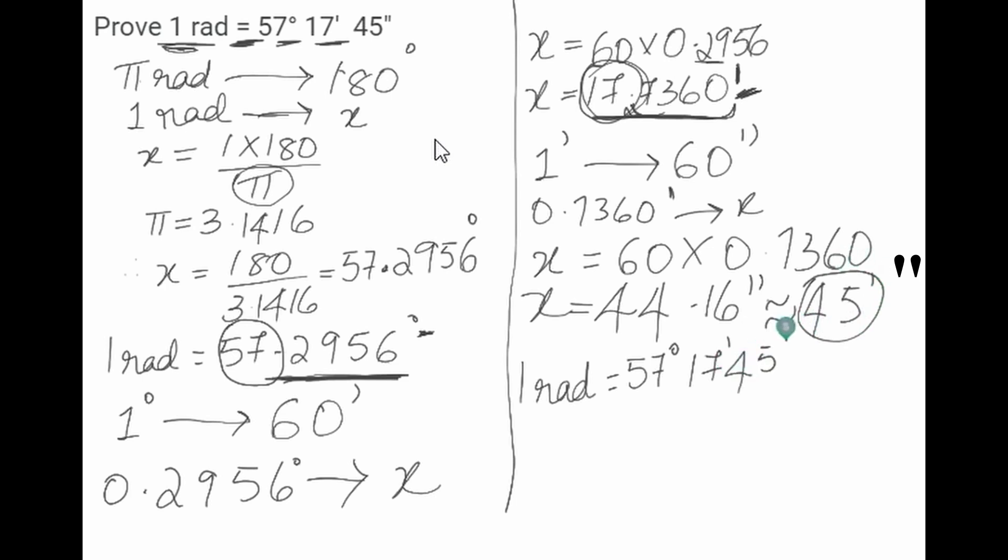Here we have proved that 1 radian is equal to 57 degrees, 17 minutes, and 45 seconds.